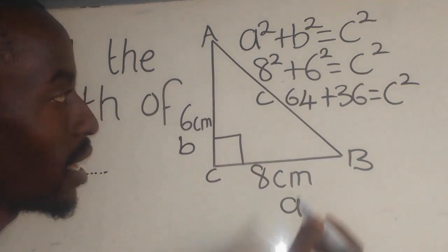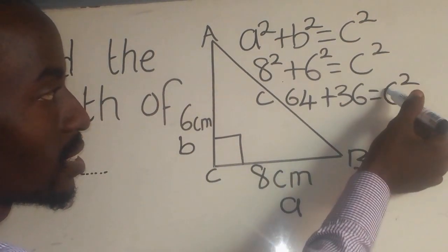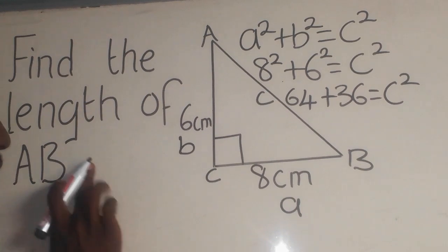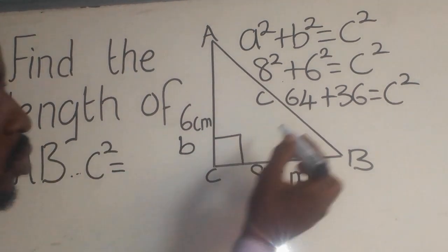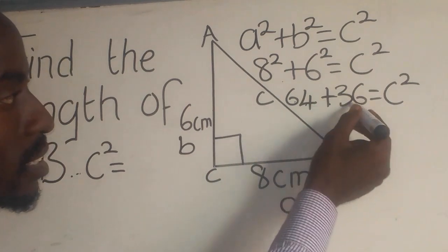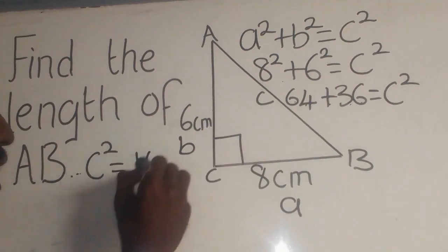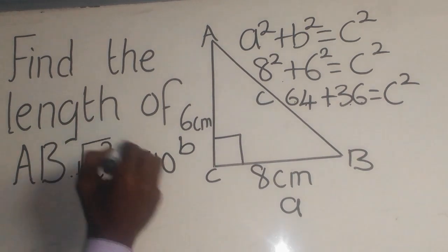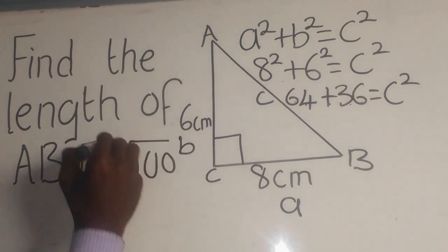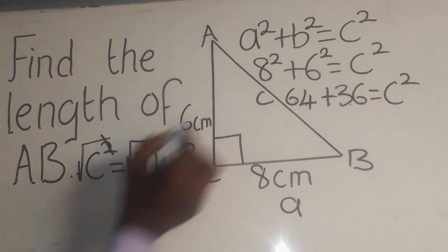Now from there, you can simply say c² equals 64 plus 36, which is going to give me 100. How can you find c? You introduce a square root on both sides and cancel out the square, leaving c, which is AB.